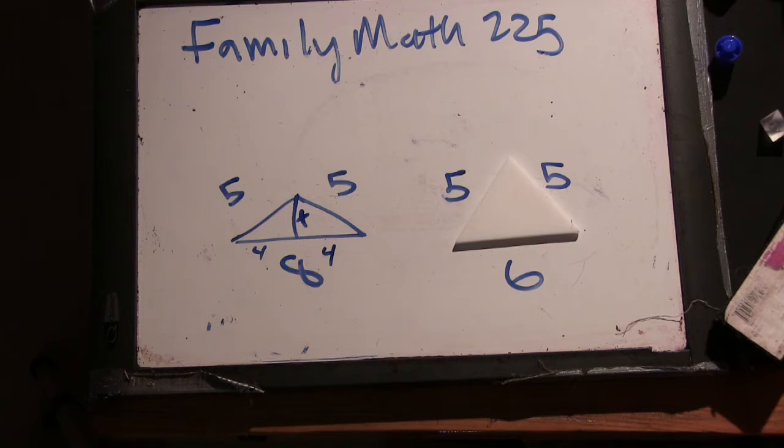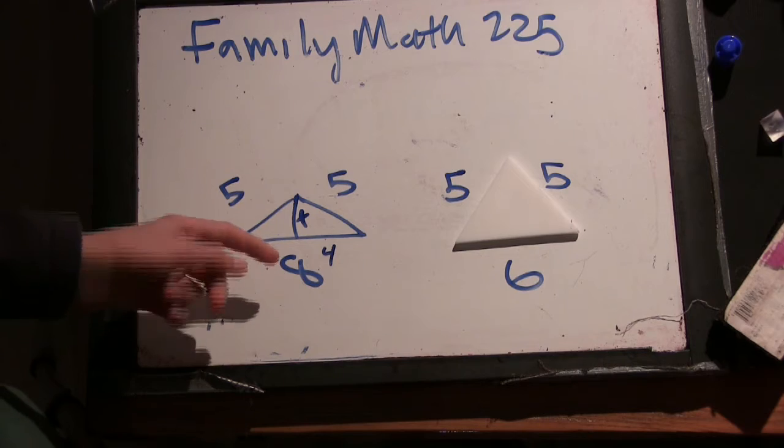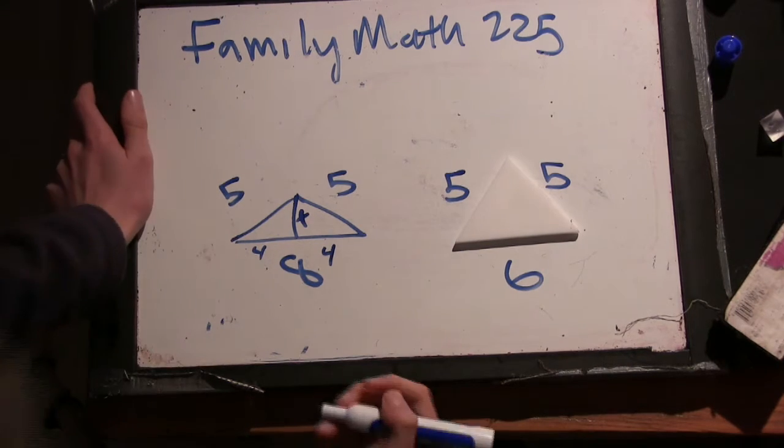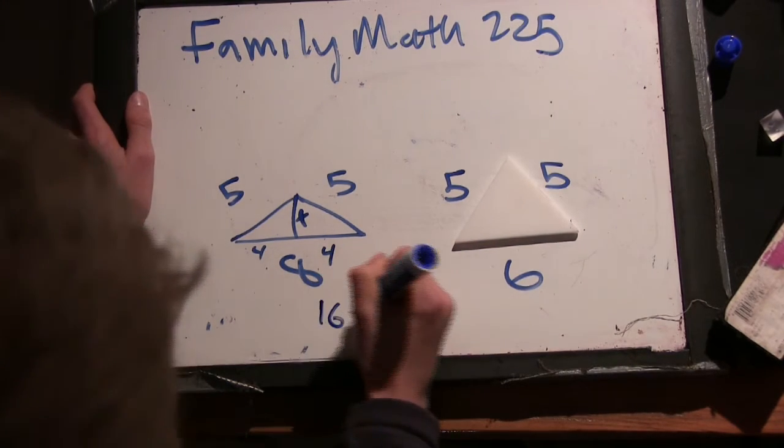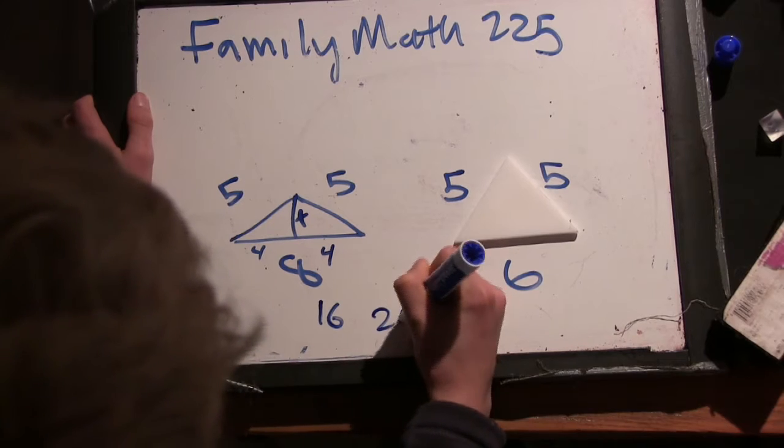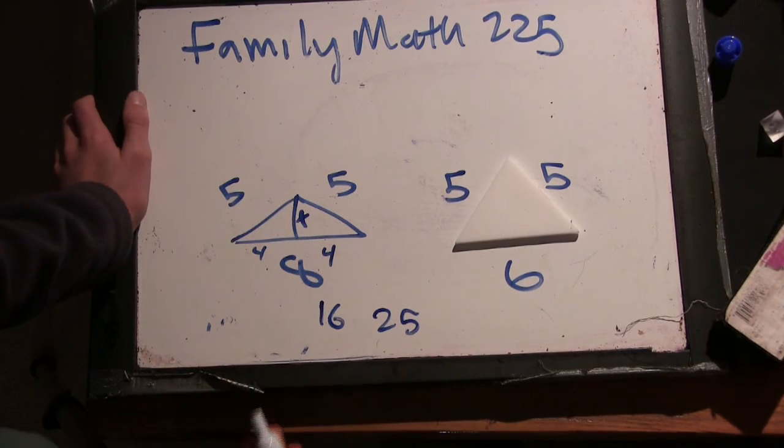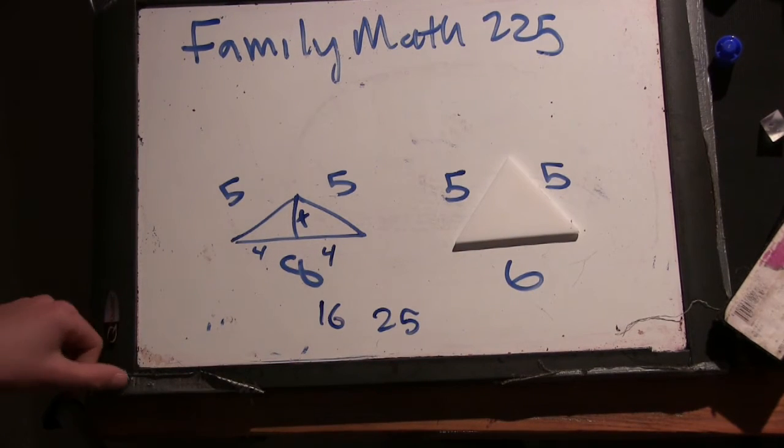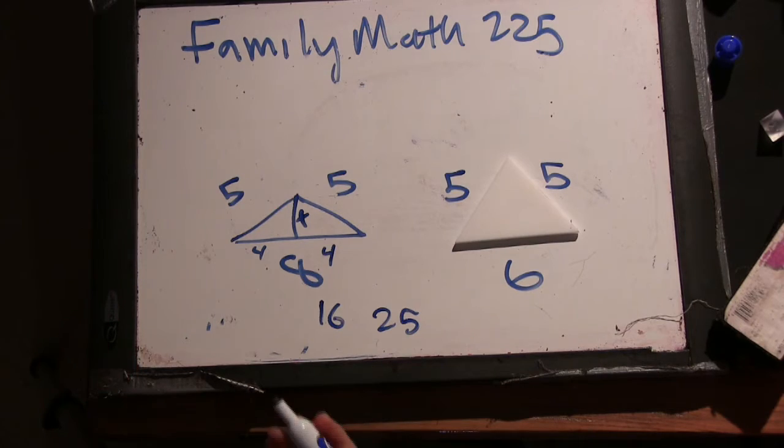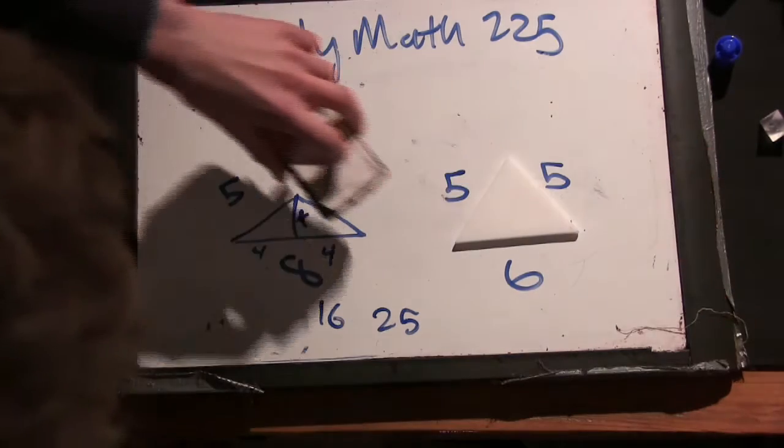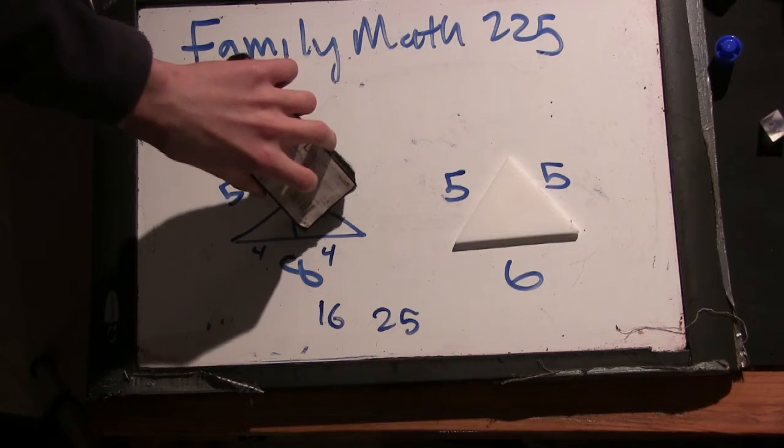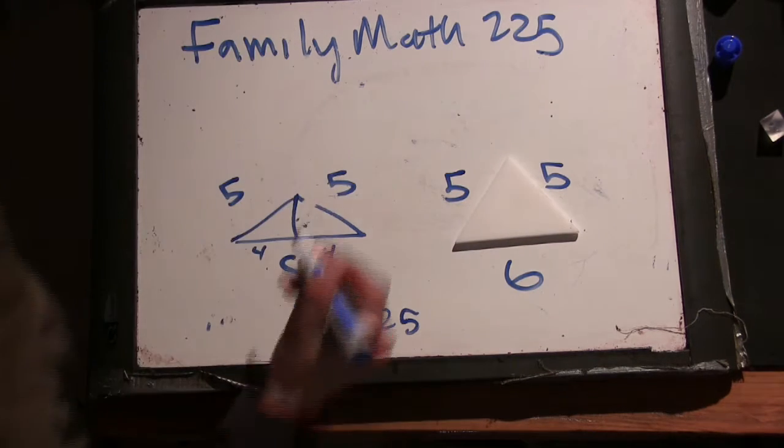Okay. So Pythagorean theorem says a squared plus b squared is c squared. So, that means, well, 4 squared is 16 and 5 squared is 25. That means 16 plus x squared is 25. Uh-huh. That's 9. And then, 9 squared is 3. 3 squared is 9. Yeah. Square root of 9 is 3.